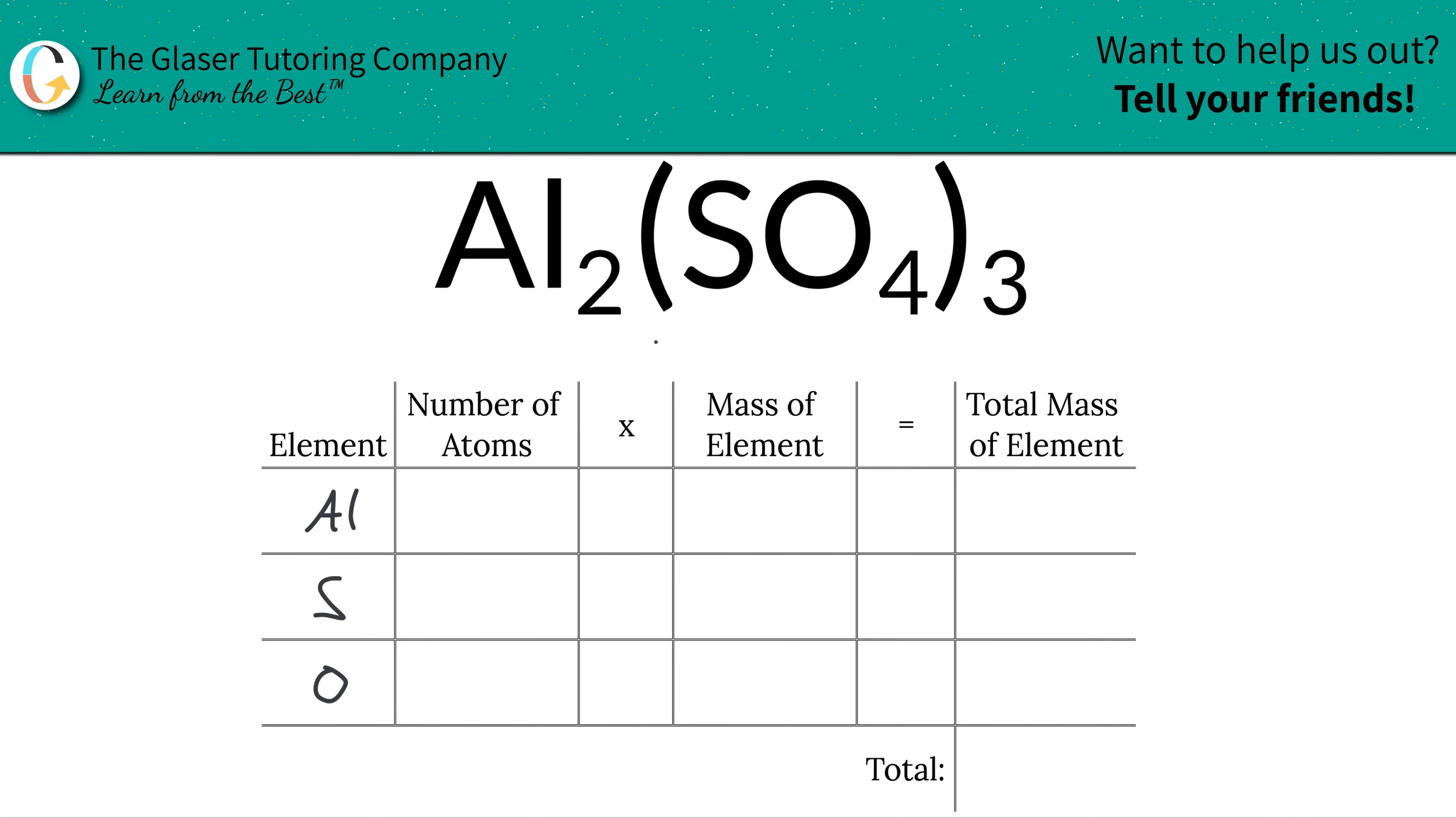Next is to write the number of atoms of each in this compound, so that's where the subscripts come into play. So at the bottom of aluminum, there is a two, that means that there are two aluminum.